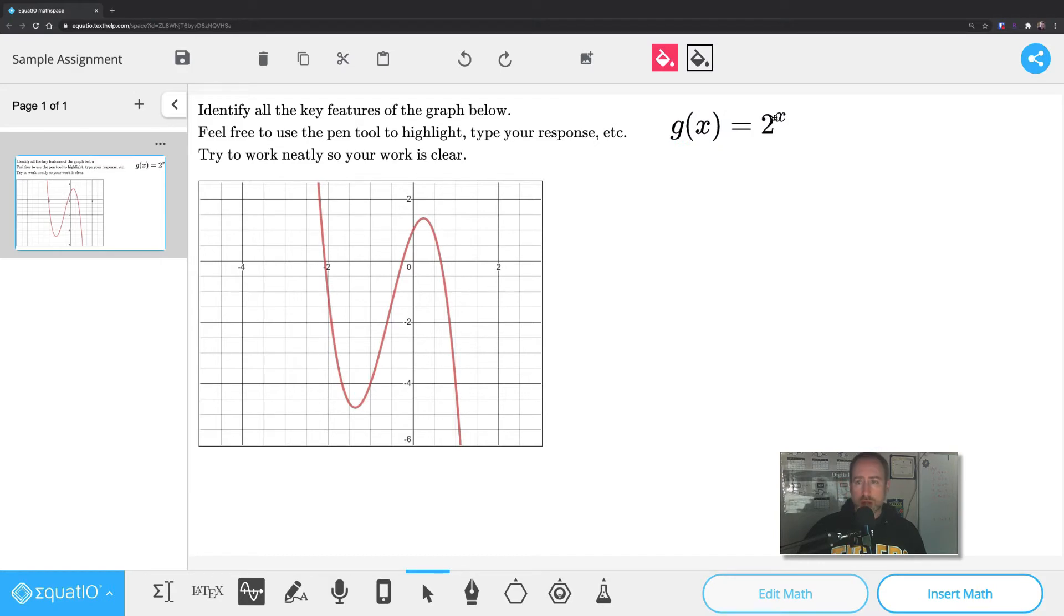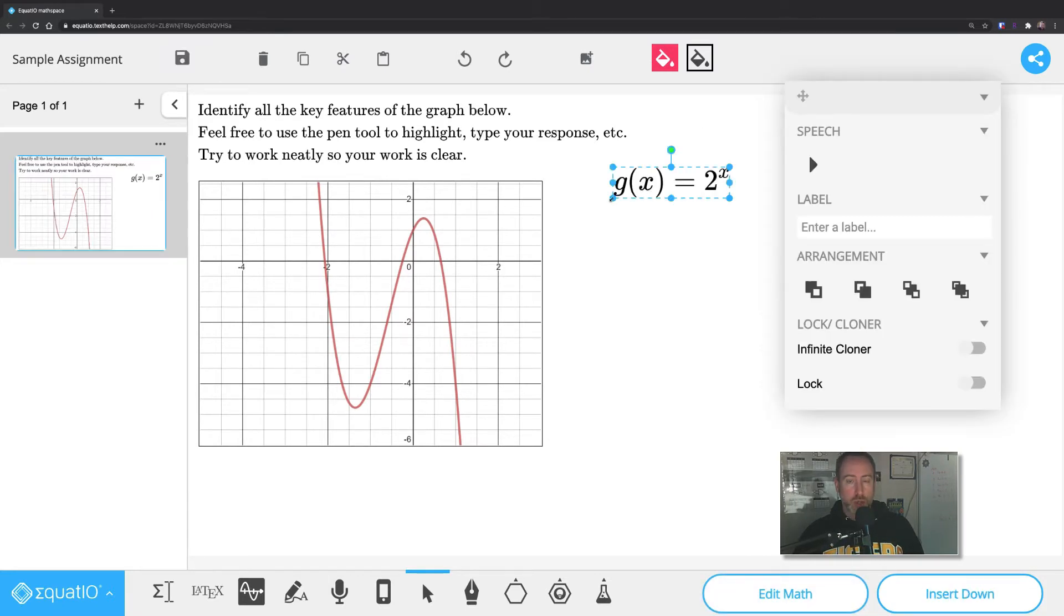But you can rotate it. You can shrink it. You can grow it. But when you do shrink and grow it, it can get kind of gross. So I do recommend that when you're shrinking and growing items, use the corner here with the shift key on your keyboard so that it grows proportionally. So you can just hold down shift while you're dragging to have it grow proportionally.